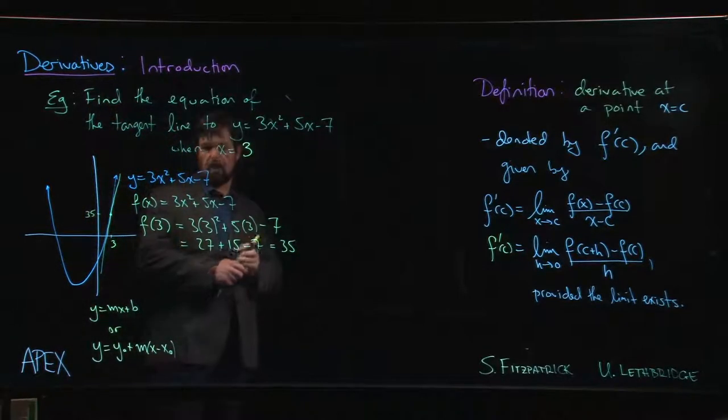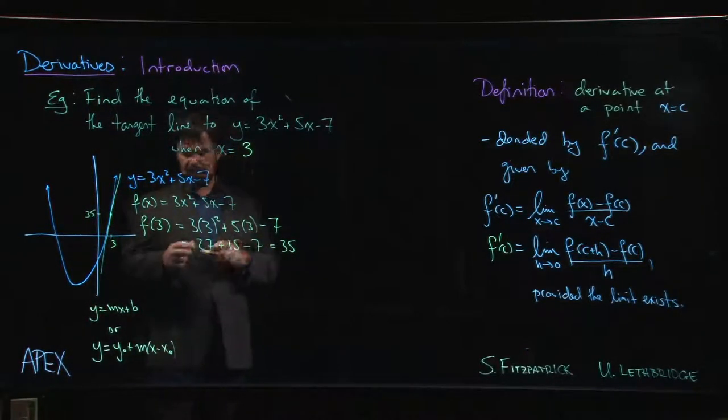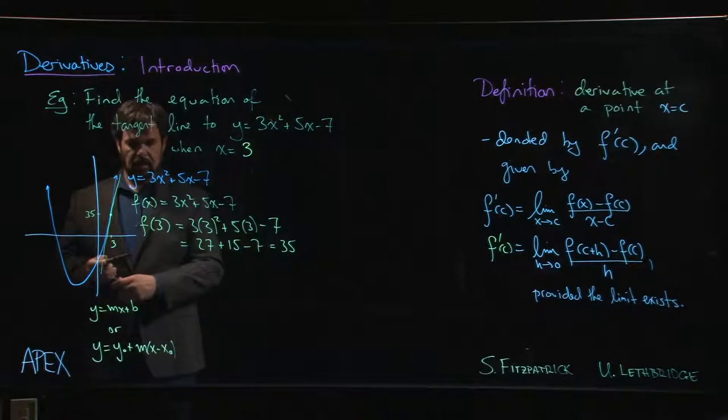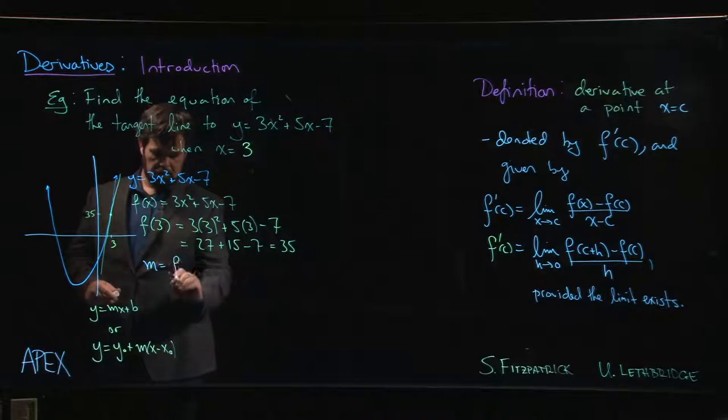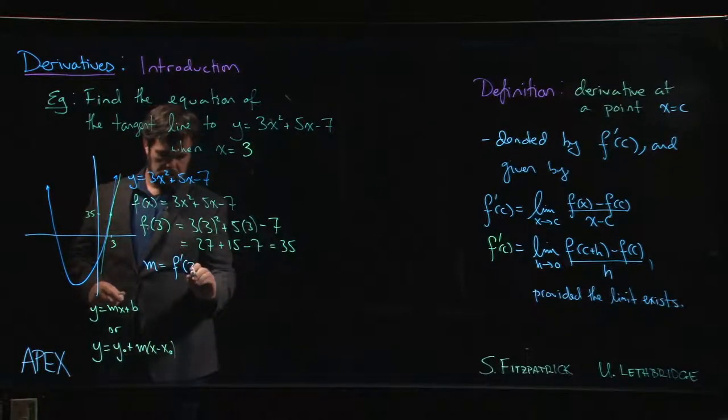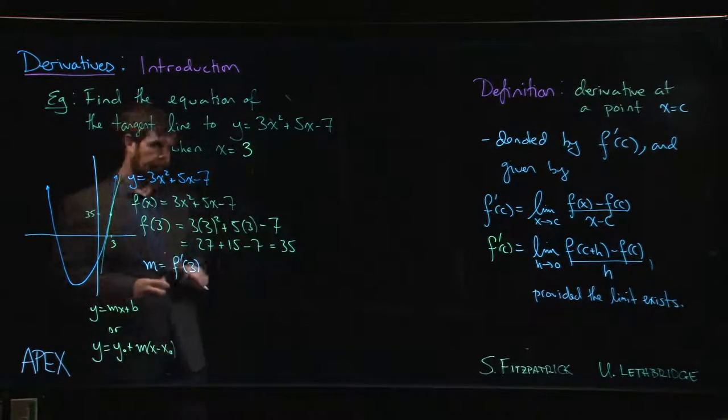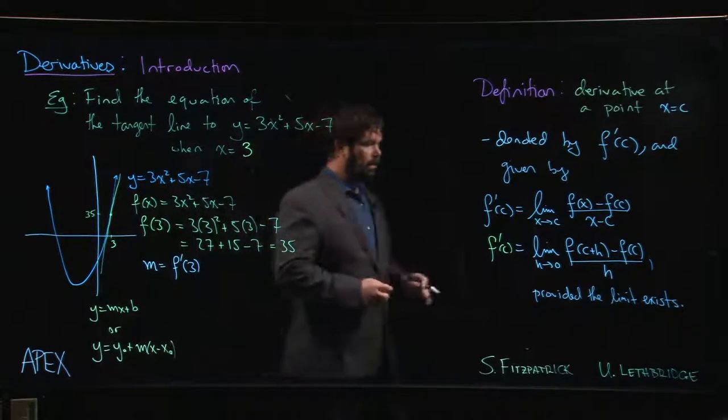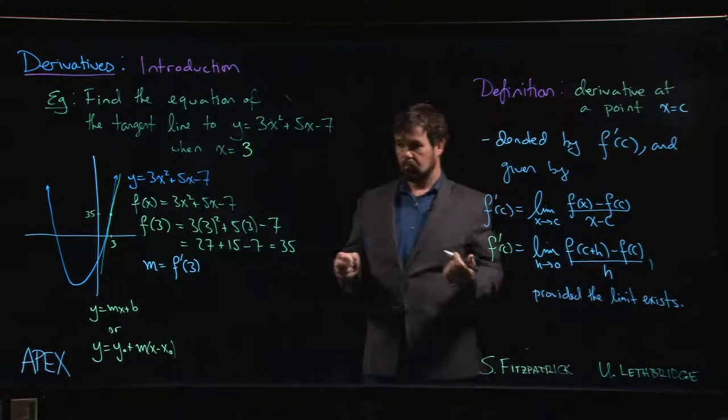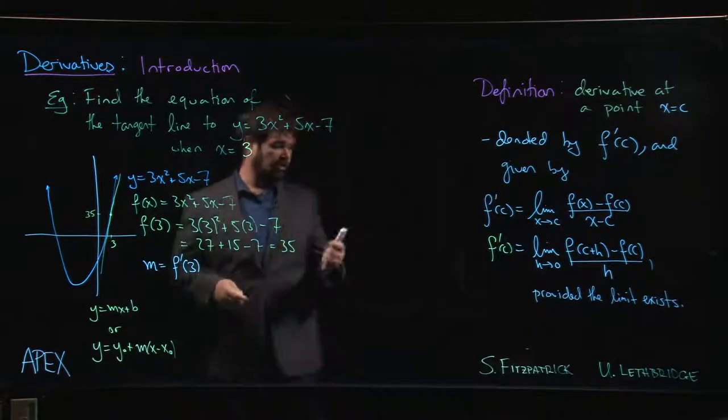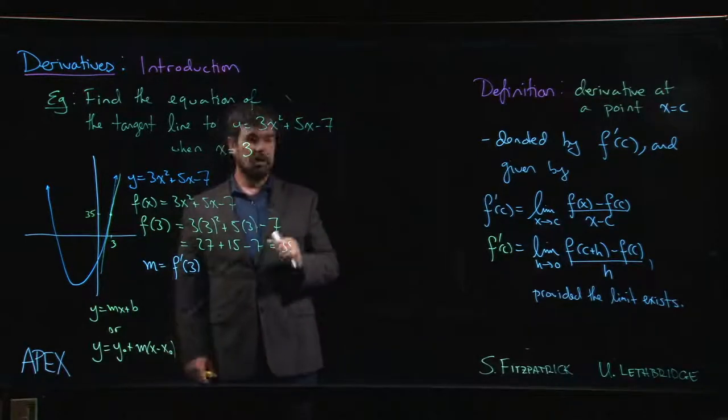Okay, and just like last time, in order to get the equation of the tangent line we need the slope, which is f prime of 3. So using this version here, we're going to set c equal to 3. h is just h, right? So h is actually the limit variable in this version of the definition.